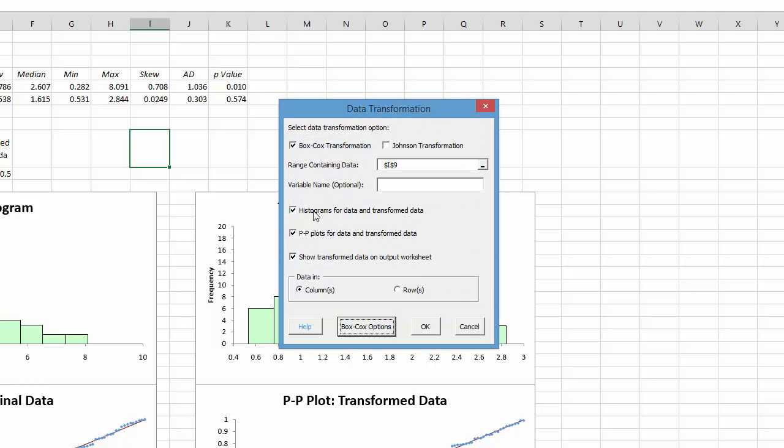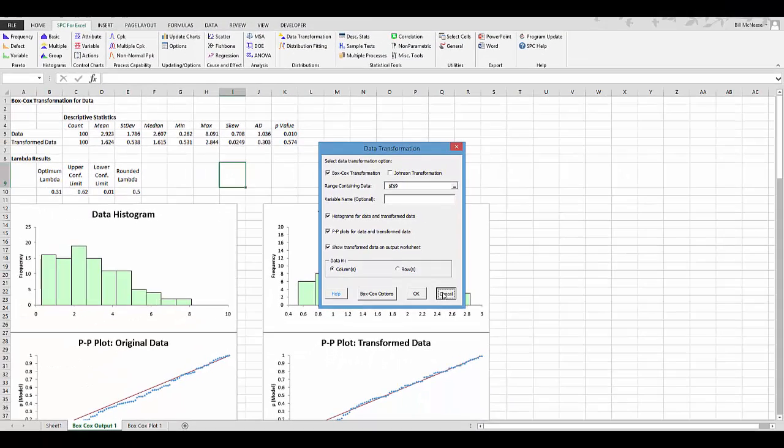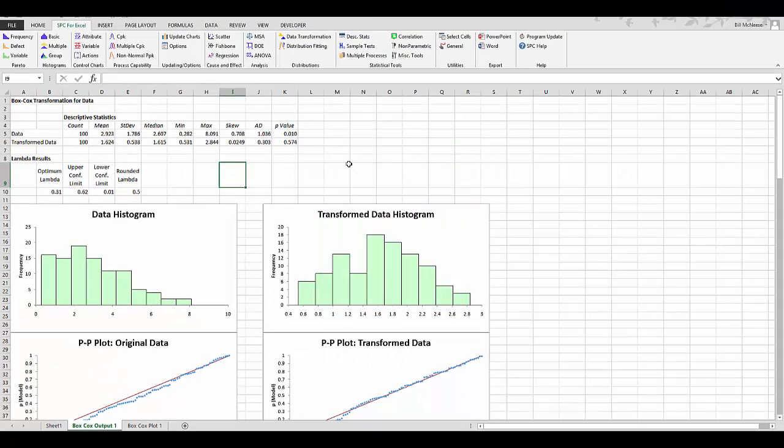And you also have the options to generate, not to generate these histograms, probability-probability plots, or to show the transformed data. But this is how the program does the Box-Cox transformation. I hope you've enjoyed it. Thanks for taking the time to watch the video.